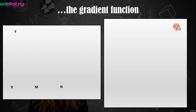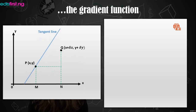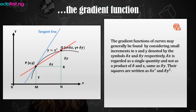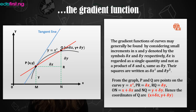We're going to be looking at a gradient function with a vertical y-axis and an x-axis on a graph. The curve plotted is y equals x squared, with coordinates for points P and Q. This curve has a tangent shown as a blue line and a gradient line shown as a red line. The gradient function of curves is found by considering small increments in x and y, denoted by delta x and delta y respectively. Delta x is regarded as a single quantity, not a product of delta and x — the same applies to delta y.